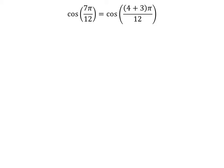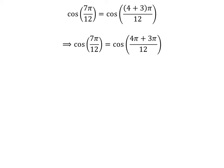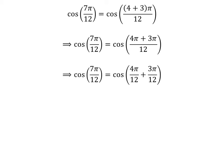We know 4 plus 3 is equal to 7, so cosine of 7 times pi upon 12 is equal to cosine of (4 plus 3) times pi upon 12. Expanding the numerator, we get cosine of 4 times pi plus 3 times pi upon 12. The fraction 7 times pi upon 12 can be expressed as the sum of two fractions: 4 times pi upon 12 and 3 times pi upon 12. Cancelling the common factors gives us cosine of pi upon 3 plus pi upon 4.